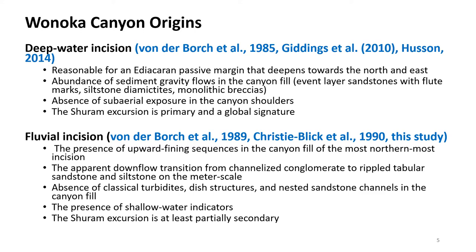For the Shuram excursion, a fluvial origin would suggest that the excursion is at least partially secondary, as the basin would have been isolated for a period of time.